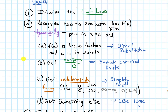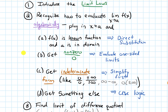If our function is a known function — things like polynomials, trig functions, or inverse trig functions — and the number a that x is approaching is in the domain, then we'll do something called direct substitution.